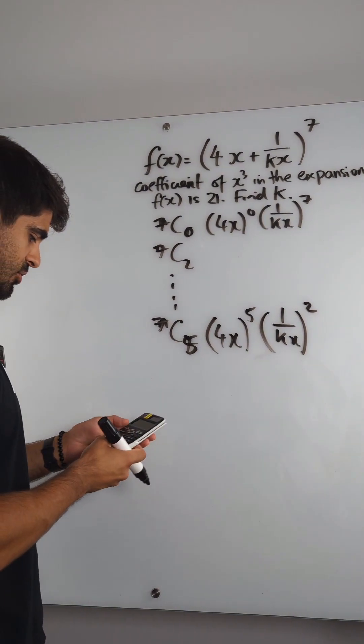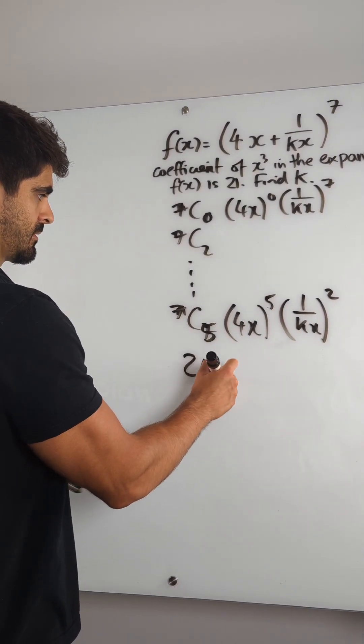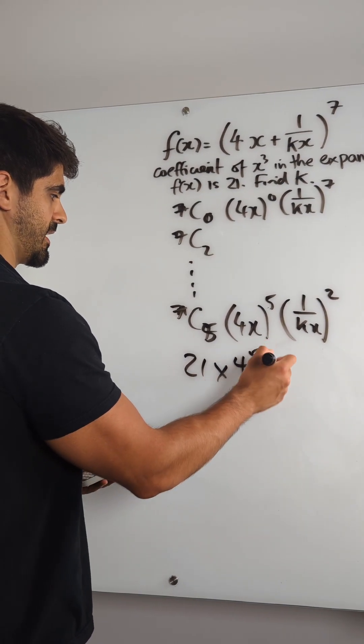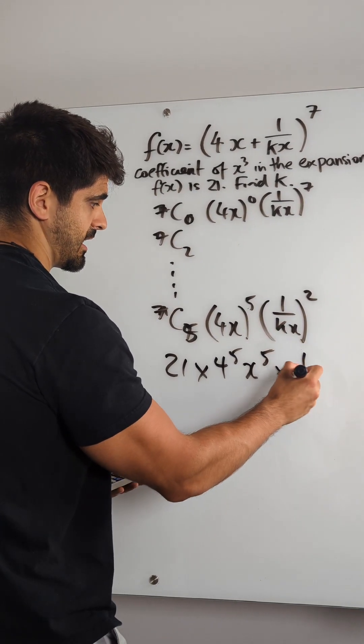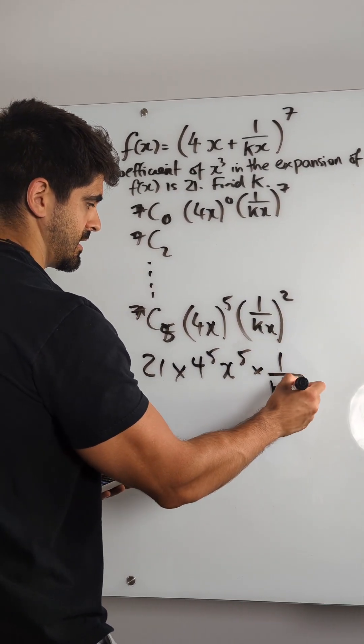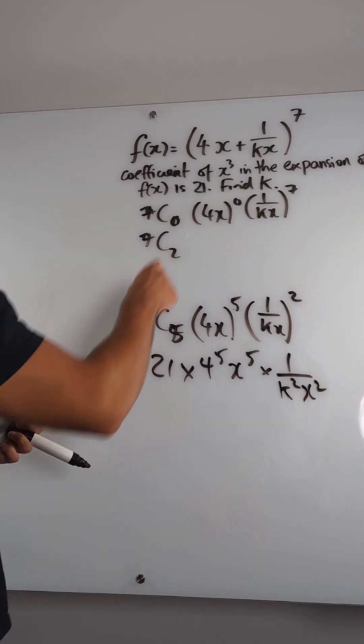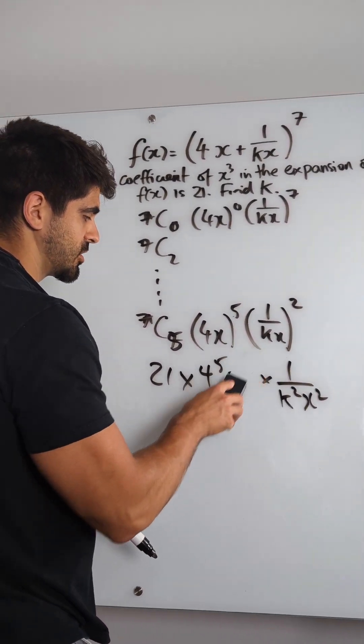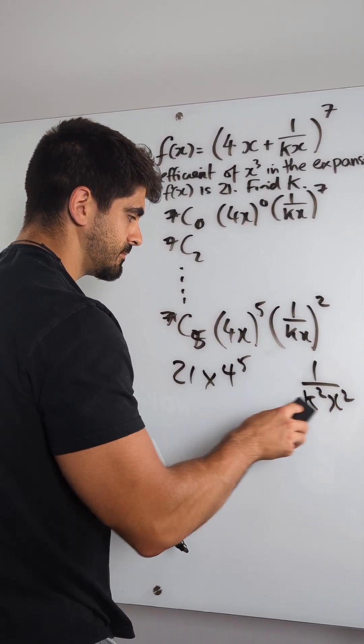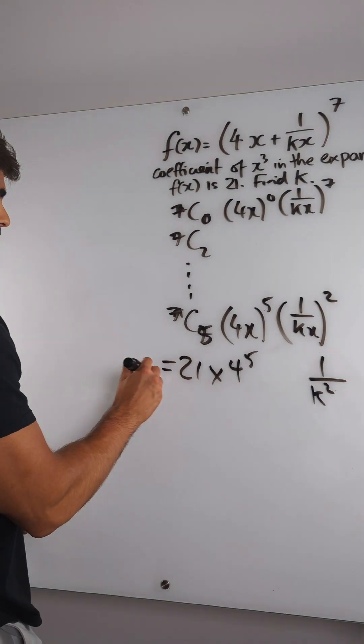Okay, so 7 choose 5, I'm just going to do that quickly. 21 times 4 to the power of 5, whatever that is, x to the power of 5, and then here we're going to have k squared x squared. Now they did say in the question that the coefficient is 21. So because it's the coefficient, we know that gives you x cubed. We don't even need that anymore. All of that equals 21.